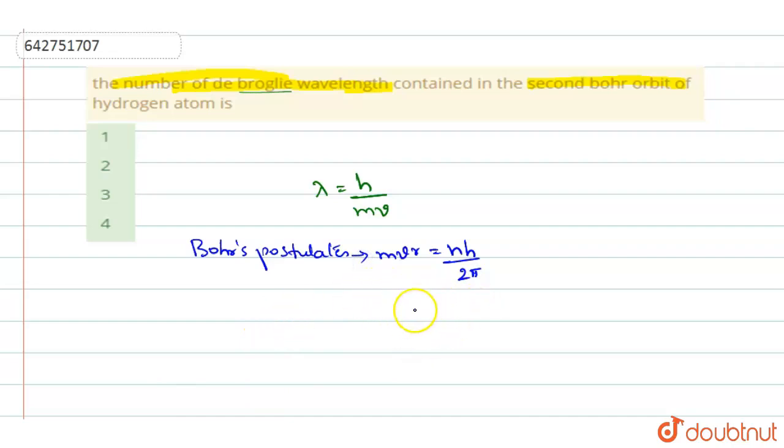Writing this for 2πr here, 2πr will equal nh by mv. So h by mv, we know is lambda from this equation.